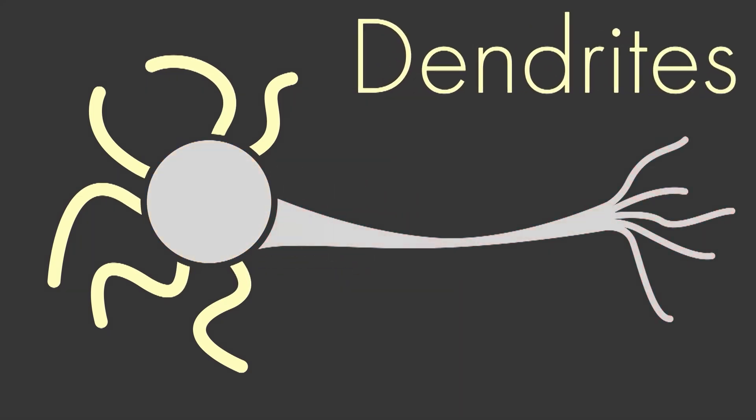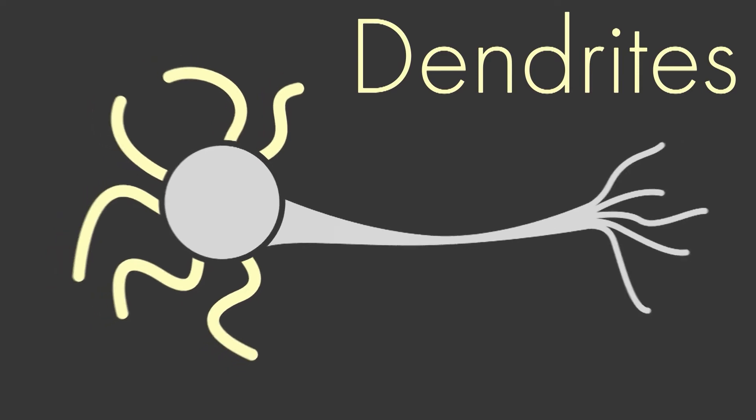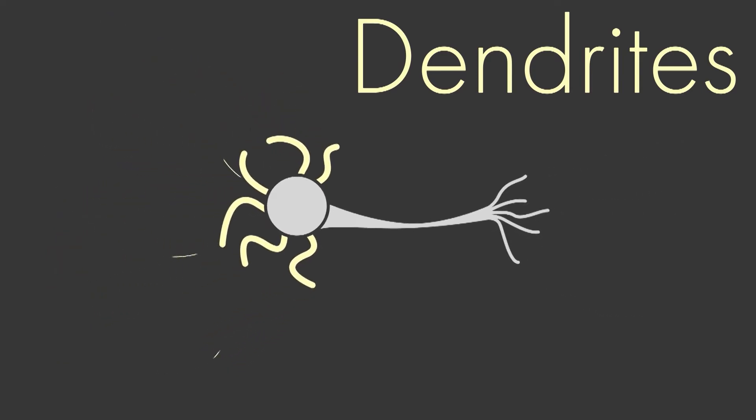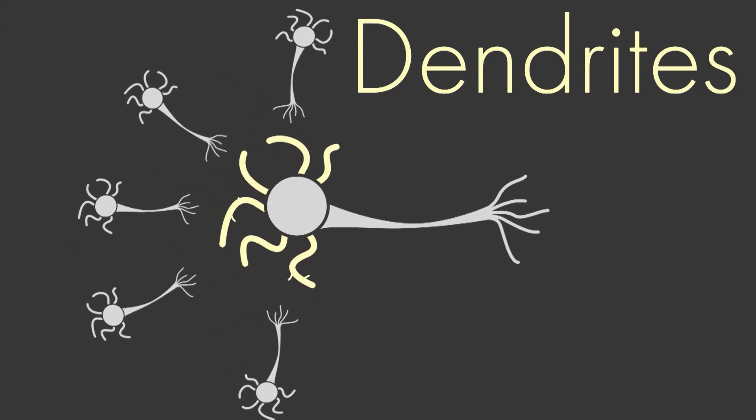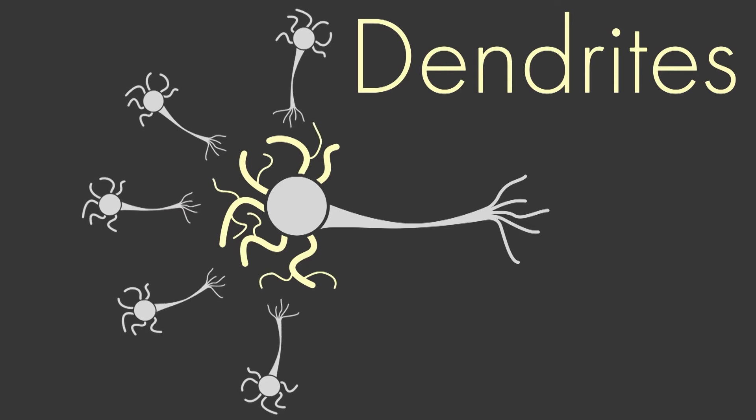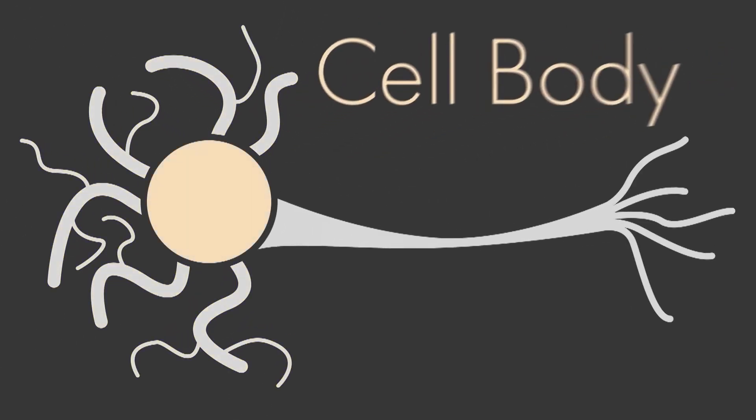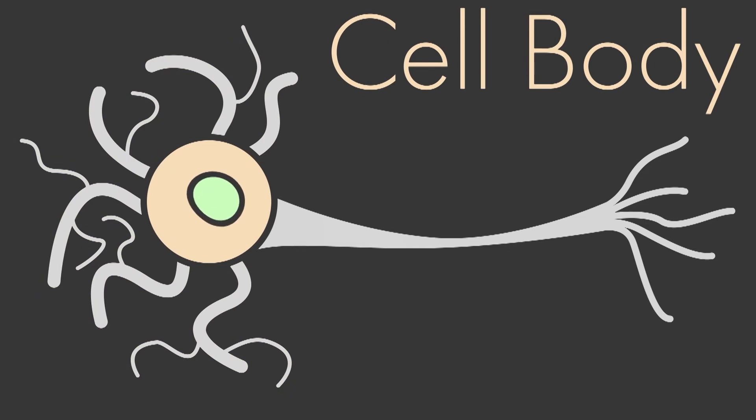The dendrites, the input side of the neuron, receive signals from many other neurons. In most neurons, the dendrites are heavily branched. The cell body contains the neuron's nucleus and all the elements needed for normal metabolic activities of these cells.